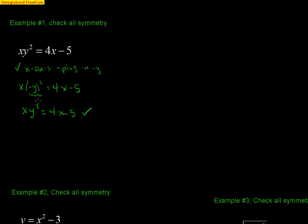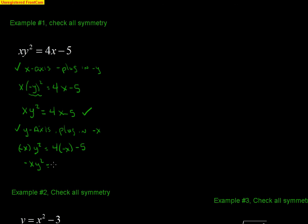If we check the y-axis, we plug in negative x: (−x)y² = 4(−x) − 5, which simplifies to −xy² = −4x − 5. That is not the same as the original, so it's not symmetric to the y-axis. It actually only worked for the x-axis, and it would wind up the same result with the origin check as well.